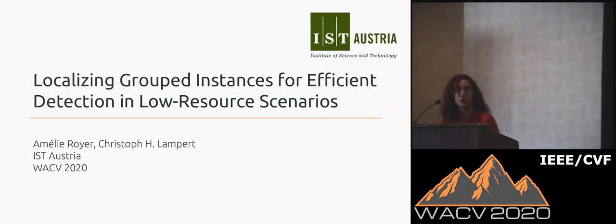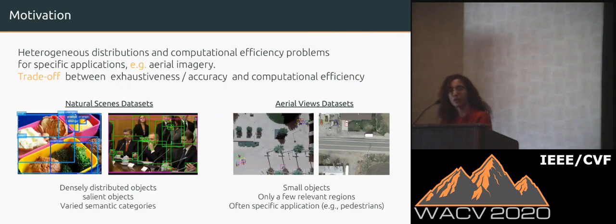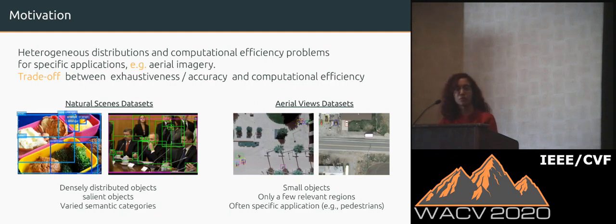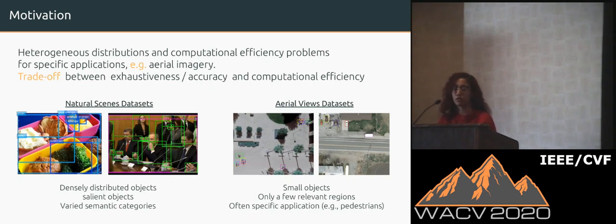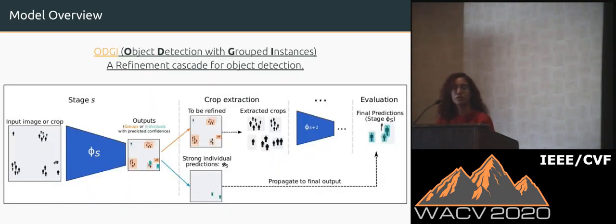Hello, everyone. I'm Emily, and I'm going to talk about a joint project with my PhD advisor on efficient object detection for aerial images. Our initial motivation is that different object detection tasks have very specific requirements. State-of-the-art detectors are often trained for exhaustivity on datasets with densely distributed objects of medium size, where the key challenge is modeling visual appearance of different semantic classes. On the other hand, aerial images like those from drones often have very small objects sparsely distributed over the image, with computational constraints because we want to run on embedded devices. Applying state-of-the-art detectors directly can lead to wasted computations, allocating as many compute resources to empty regions as to relevant ones.